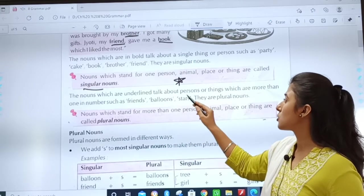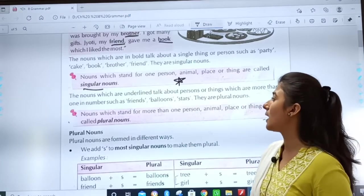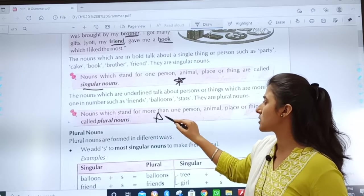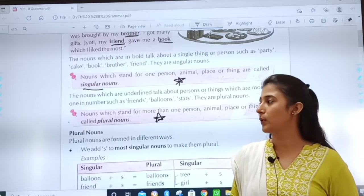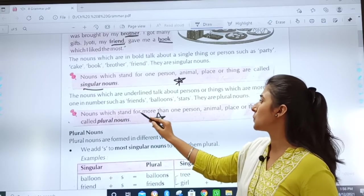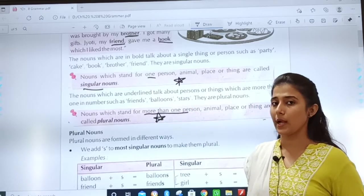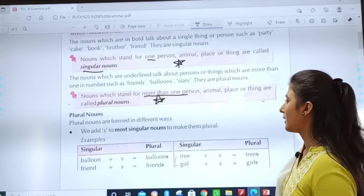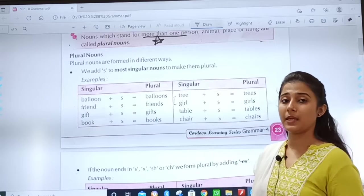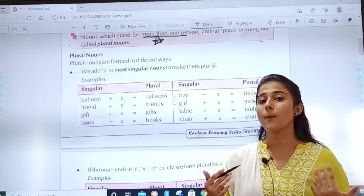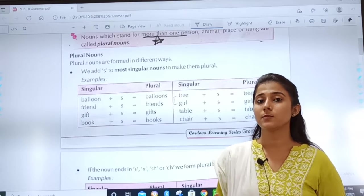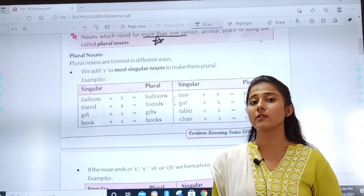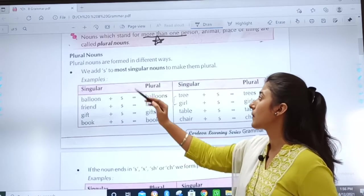The nouns which are underlined talk about the persons or things which are more than one. We discussed in that paragraph. And now, again this box is important. This is the definition of plural nouns. Very easy. Nouns which stand for more than one and here only one. Rest remains the same. Person, animal, place or thing. Now, in this chapter you have various pink boxes which are very very important.